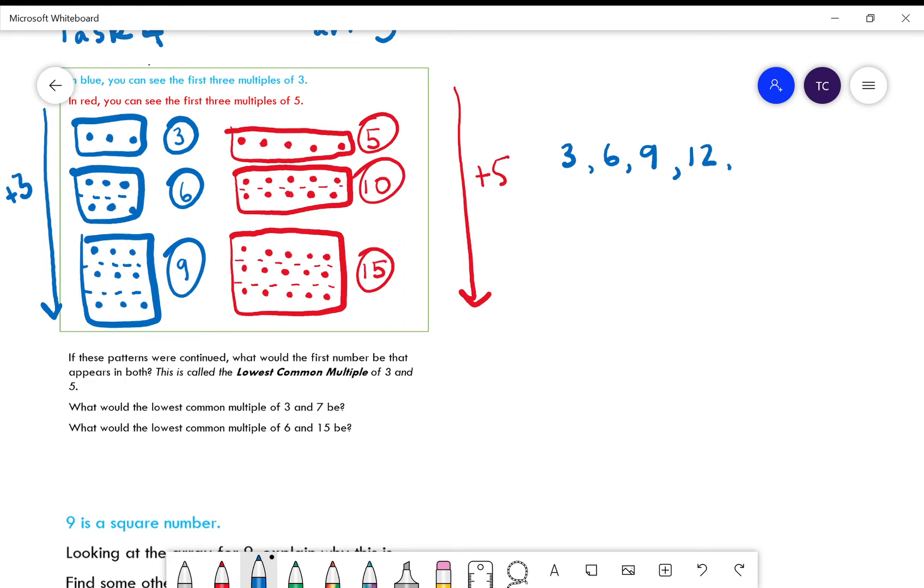If I continue this, we've got 3, 6, 9. If I add another three it'll be 12, and then I add another three it'll be 15. These are the multiples of three that I've just drawn here.